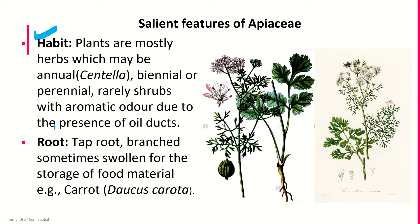Pollination is entomophilous due to nectar, scent, and the protandrous nature of flowers. Please learn the floral formula which gives an idea of the entire family. Learn each of the symbols and their significance — for instance, the symbol for actinomorphic versus zygomorphic — in order to remember the floral formula.